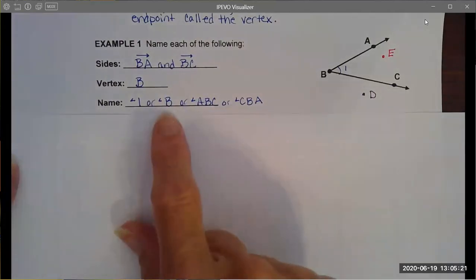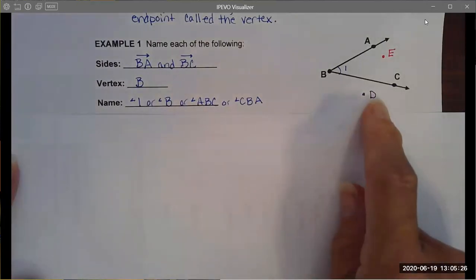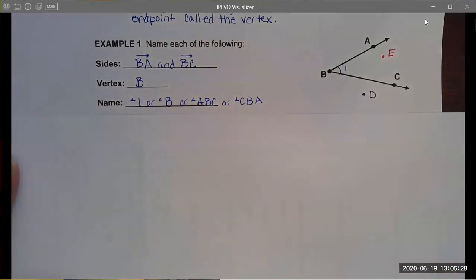We do want to be careful with only using one letter, the vertex, when naming an angle. That works fine if the angle is in isolation, but if the angle is built from other lines then it can be ambiguous and you'll have to use all three letters.